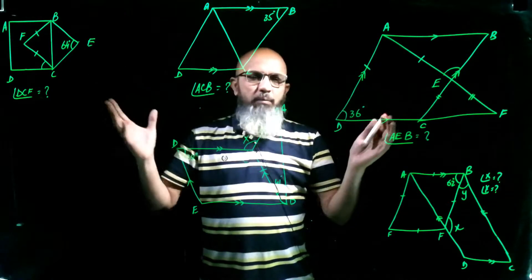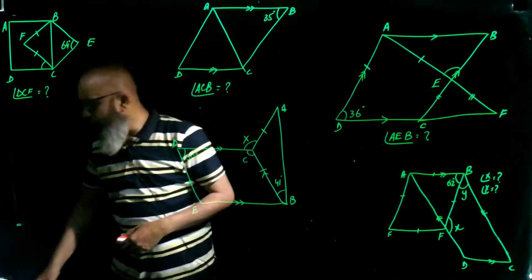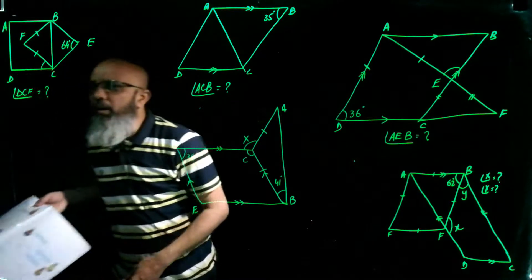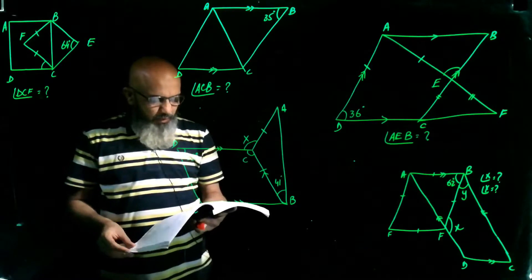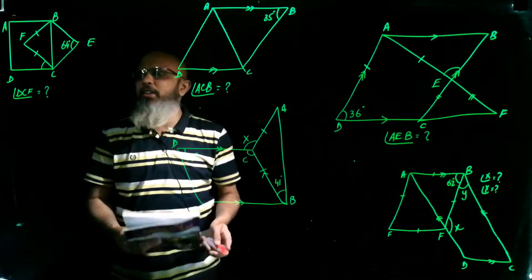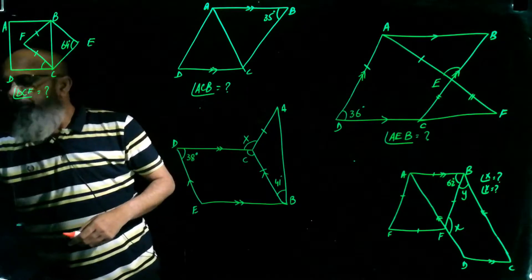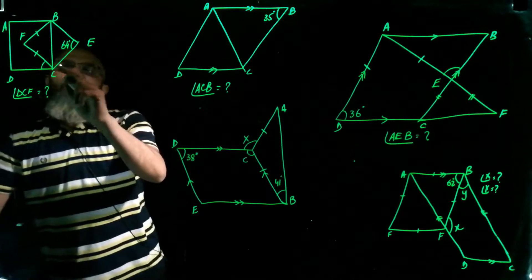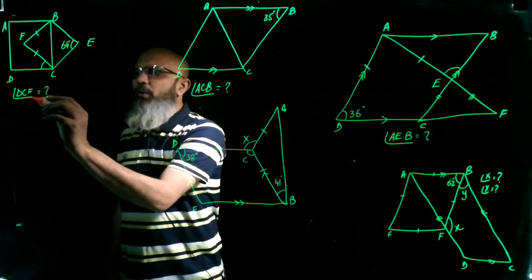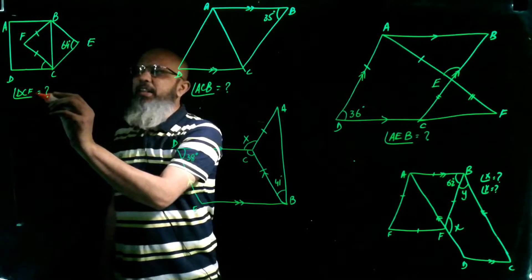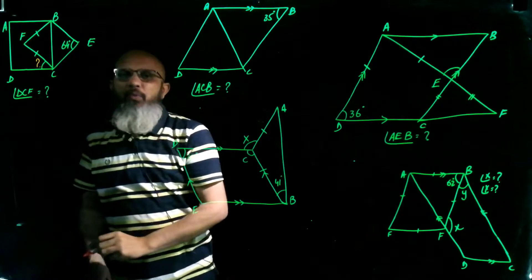I'll draw some questions from your textbook. The first question is: ABCD is a square and BECF is a rhombus. We have to find the unknown angle DCF.